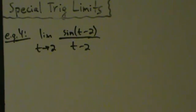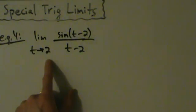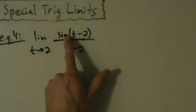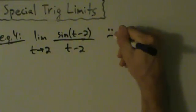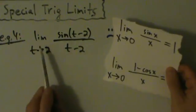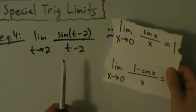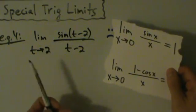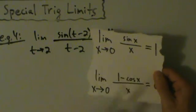As always, direct substitution first. If we directly substitute 2 in for t, we get sine of 0 divided by 0, in other words 0 over 0, which makes us sad. But again, we see a trig function here, so this kind of looks like a special trig limit. We have t's instead of x's, but that doesn't matter at all. Whatever your variable is — t, x, z, s, y, w, theta, alpha, beta — it does not matter. You can always use these formulas.